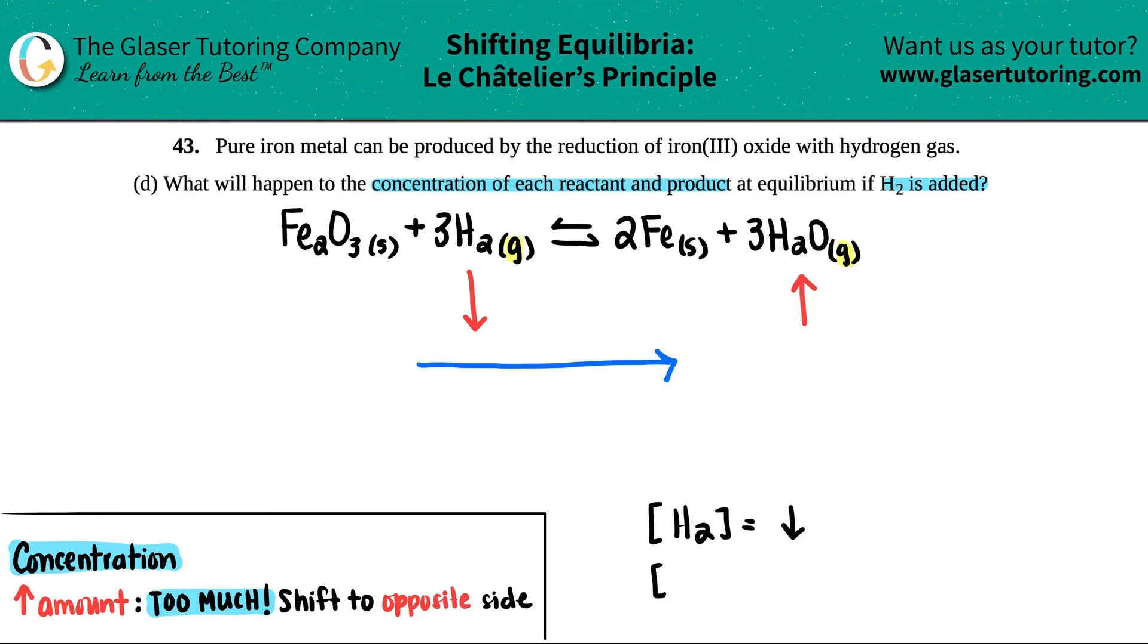H2O would increase. Okay, but now what's going on with Fe2O3 and just the Fe? Well, if you notice that these are solids. So remember, solids do not have anything to do with equilibrium. They are not in the equilibrium equation - we cancel them out when we're trying to